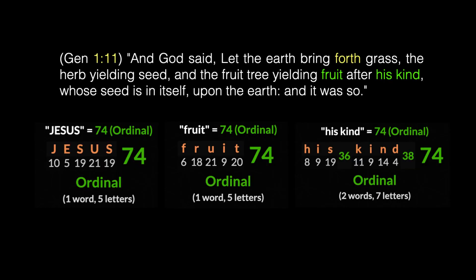Speaking of the third day and seed, let's go to the third day of creation — Genesis 1:11: 'And God said, let the earth bring forth grass, the herb yielding seed and the fruit tree yielding fruit after his kind whose seed is in itself upon the earth and it was so.' Notice it's Genesis 1:11 — the pattern 1-1-1. The word 'forth' occurs 888 times in the King James Bible. Notice that the words 'fruit' and the phrase 'his kind' each have a value of 74, like the name Jesus — I'll bring these facts back later in this video.